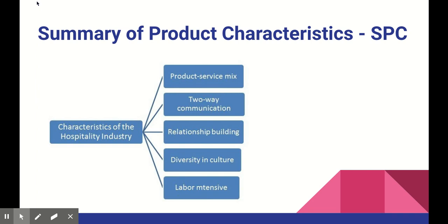Some of the information you will find on an SPC includes: the trade name of the medicinal product, qualitative and quantitative composition, the pharmaceutical form, clinical particulars such as therapeutic indications, contraindications, special warnings, effects on ability to drive, and undesirable effects. Also pharmacological properties, pharmaceutical particulars such as a list of excipients, shelf life, and nature of the container. Plus the marketing authorization holder, the date for authorization, and the date of revision.